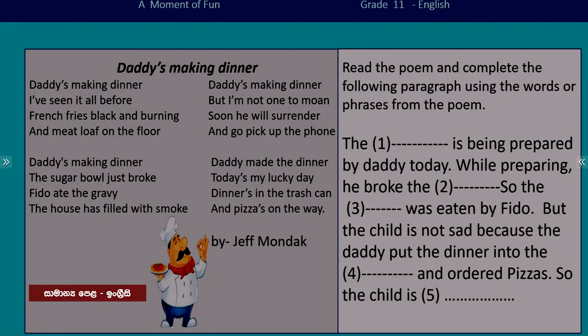What about the third one? The blank was eaten by Fido. We have the clue — 'eaten' and 'Fido.' In the poem: 'Fido ate the gravy' — it is in the second stanza. The gravy was eaten by Fido. But the child is not sad because Daddy put the dinner into the trash can.